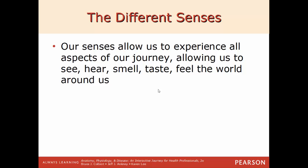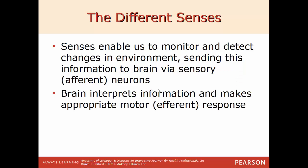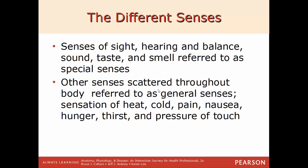Our senses allow us to experience all aspects of our journey in life, allowing us to see, hear, smell, taste, and feel the world around us. The senses enable us to monitor and detect changes in our environment, sending information to our brain via sensory neurons or afferent neurons. The brain then interprets that information and makes appropriate motor responses through motor neurons or efferent neurons.